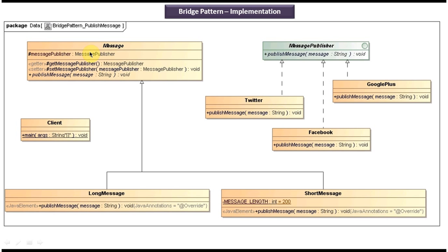On the left side you can see a Message abstract class which has an abstract method publishMessage. This abstract class is extended by two concrete classes: LongMessage and ShortMessage, both of which provide an implementation of publishMessage. The ShortMessage class checks whether the message length is less than or equal to 200 characters — if so, it publishes the message; otherwise it won't allow it. This publishMessage method will use the Twitter message publisher.